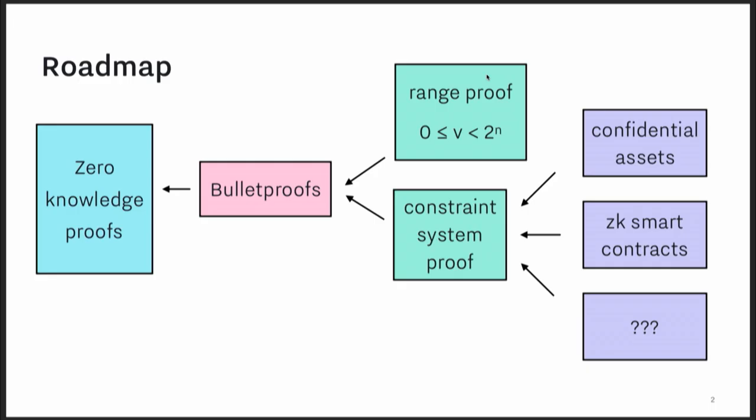I'm going to first start by talking about zero-knowledge proofs — what are they, how do they generally work. And then I'll talk about the Bulletproofs paper, which is one of many zero-knowledge proof protocols out there. Later on today, Rebecca is going to talk about other kinds of zero-knowledge proofs. Then I'll talk about how you can build a range proof using Bulletproofs, and also how you can build constraint system proofs using Bulletproofs. And then I'll talk about what we at Interstellar have been building on top of these constraint system proofs — a confidential assets protocol and a zero-knowledge smart contract language.